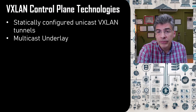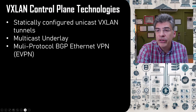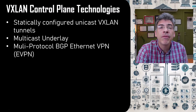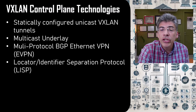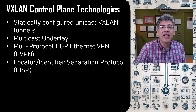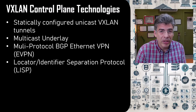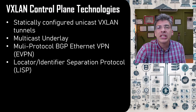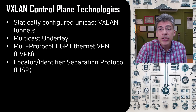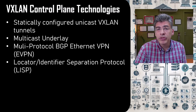But there are two more solutions available. You can use multi-protocol BGP with Ethernet VPN, which is a popular solution for data centers and private clouds, or you can use LISP — Locator Identifier Separation Protocol — which is popular in software-defined networking deployments. We'll talk more about these technologies and how they are used for mapping MACs to VTEPs in upcoming videos. We'll focus more on the first two, but all of them are valid and deployable solutions.